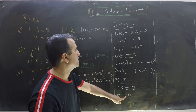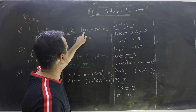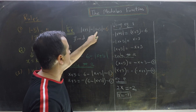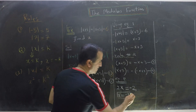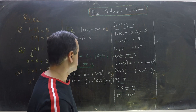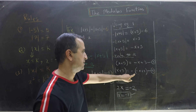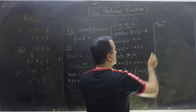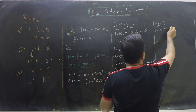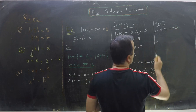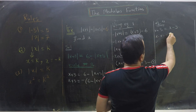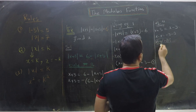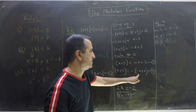Let's check if x equals minus 1 is valid. Substituting: minus 1 plus 3 is 2, and minus 1 plus 5 is 4, so 2 plus 4 equals 6. Yes, this is a valid answer. Now for Equation 4: x plus 5 equals x minus 3, so x minus x equals minus 3 minus 5, giving 0 equals minus 8. Obviously this cannot be true, so Equation 4 gives no value of x.